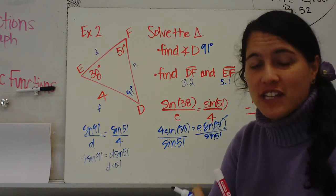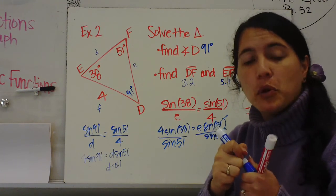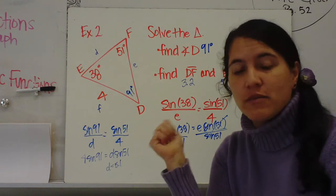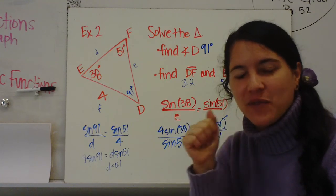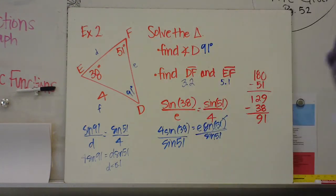So remember, the law of sines, you're going to set up a proportion to find either the missing angle or the missing side. We'll practice more.